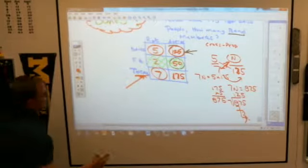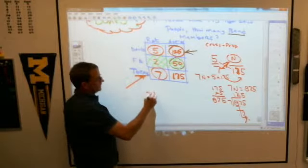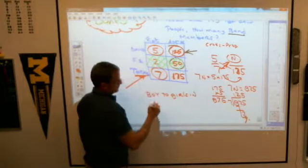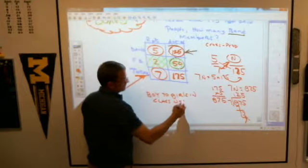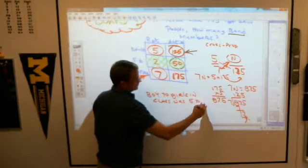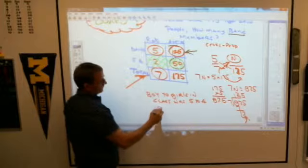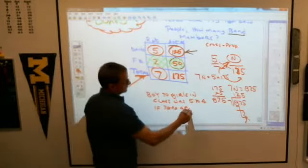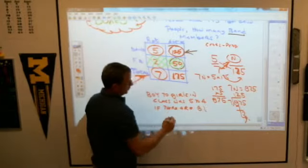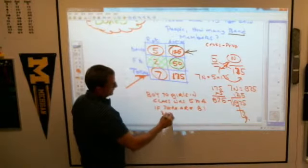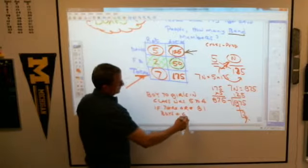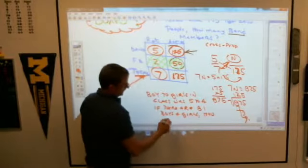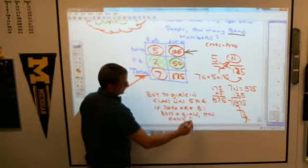If the ratio of boys to girls in a class, boys to girls in class, was 5 to 4. If there are 81 boys and girls, boys and girls, how many boys are there?